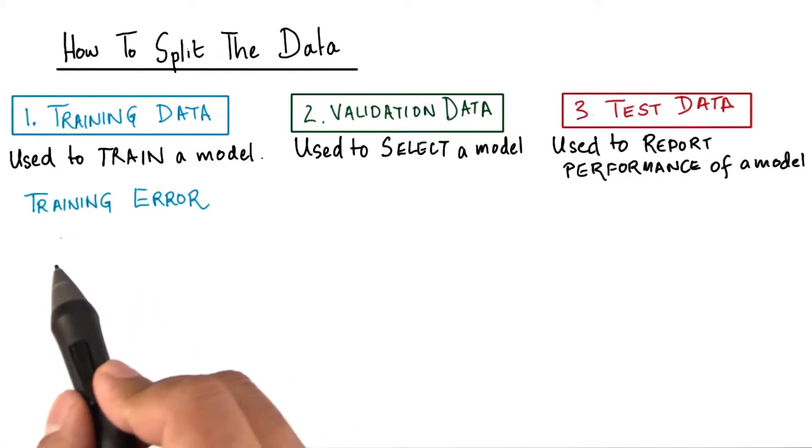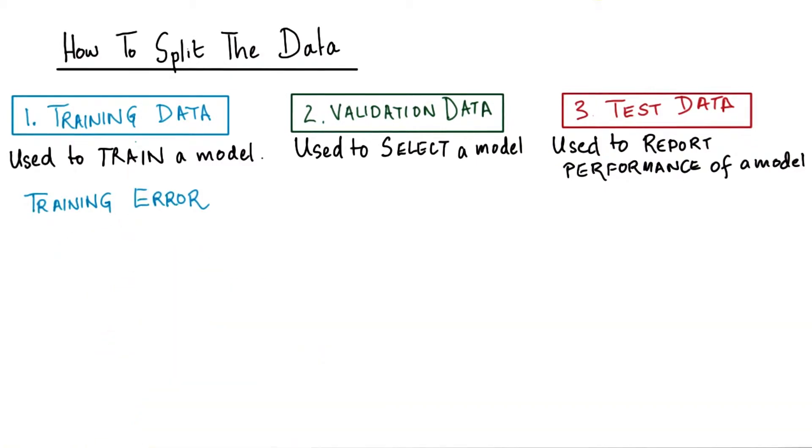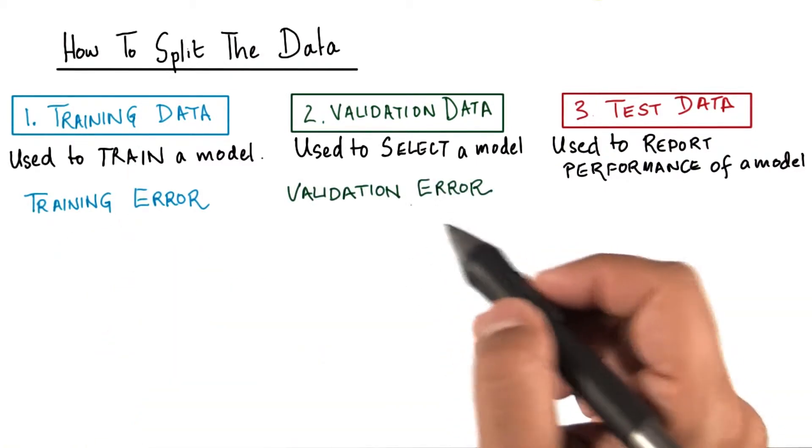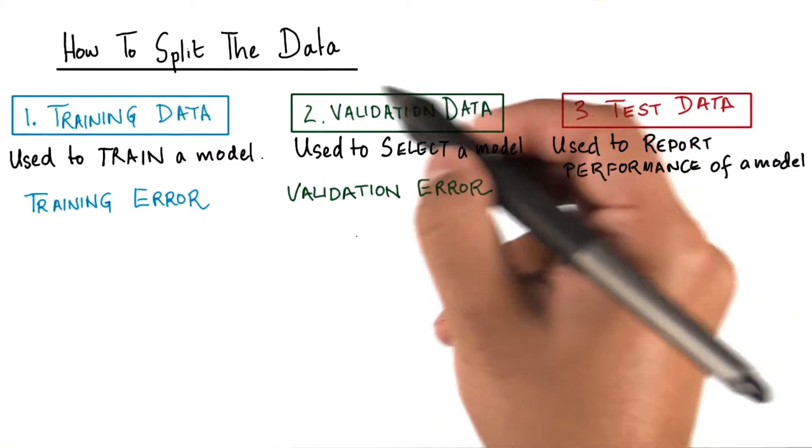Now, a training error is used to tune the performance of the model on the training set. A validation error is used to select the model that works best among many models.